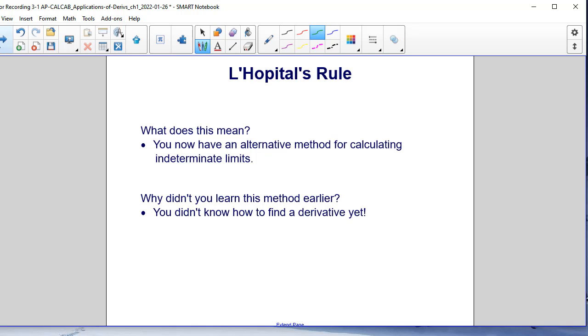So what this means is that we now have an alternate method for calculating indeterminate limits. And why didn't we learn about this earlier, you might ask? Because at that time we didn't know about derivatives.